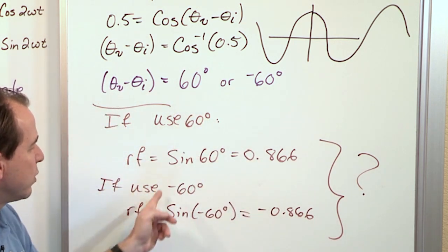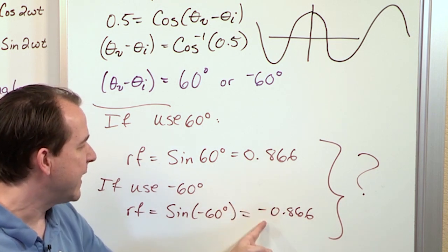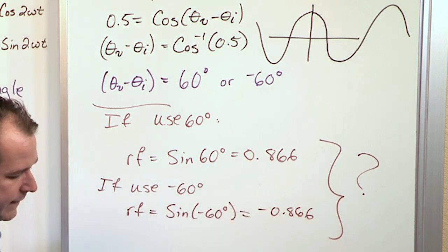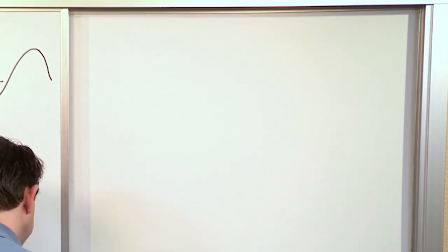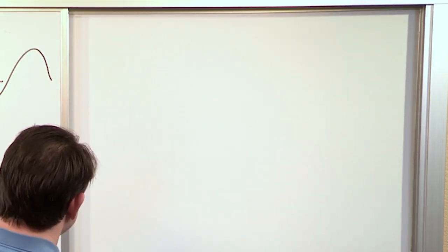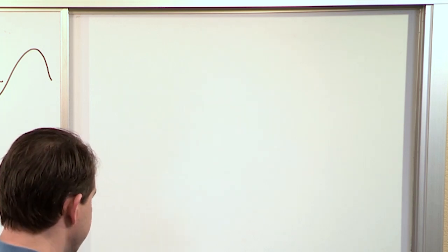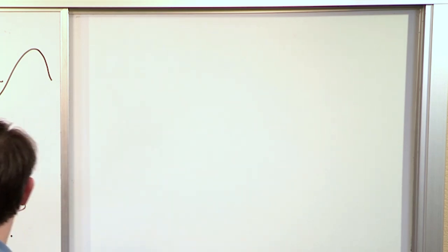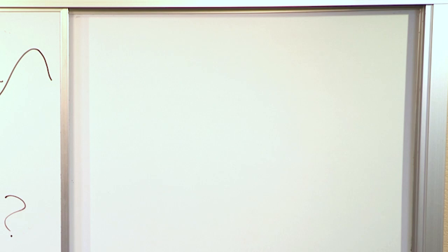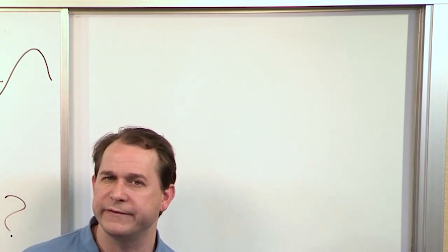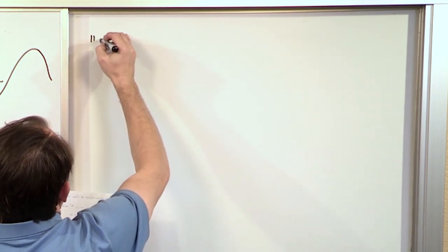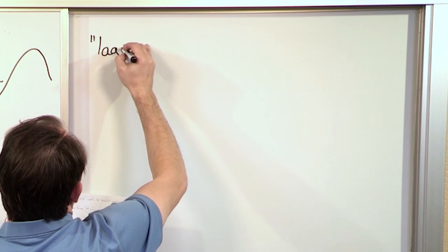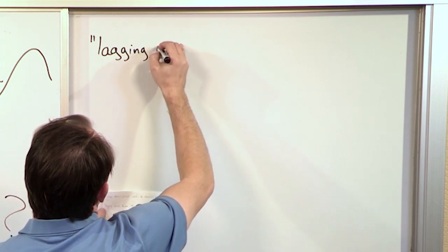To fix this problem, we use terminology. Usually you won't see just 'the power factor is 0.5' by itself. What you're going to see instead are descriptive words — one of which is called the lagging power factor.